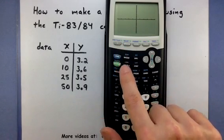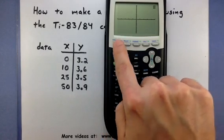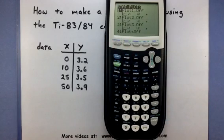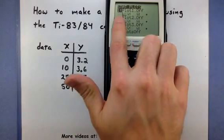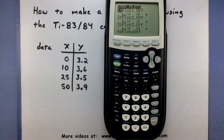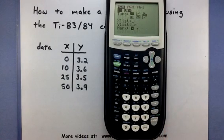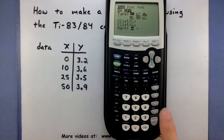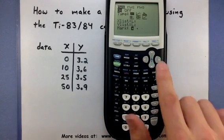Instead of pressing the Y equals button, press the second button and then the Y equals to bring up our stat options. We're going to go ahead and mess around with plot 1, so it's highlighted, press Enter. And the first thing we want to do is turn it on. So make sure on is highlighted, press Enter.